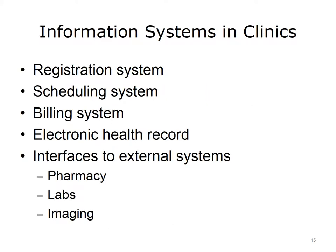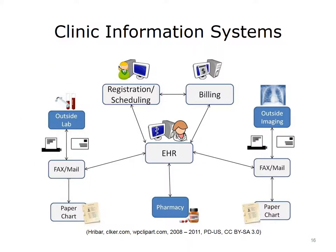Information systems in clinics perform many of the same tasks that hospital systems do, but on a smaller scale. In a clinic, these systems may be separate or they may be combined into one system. Similar to a hospital setting, in a clinic, there are systems that register patients, schedule appointments, and manage billing. There is an EHR for collecting, managing, and displaying patient data. Clinic information systems need to communicate with systems outside the clinic, such as pharmacies, labs, and imaging services. This slide shows a diagram of a clinic information system operating independently, in other words, not being part of a hospital.